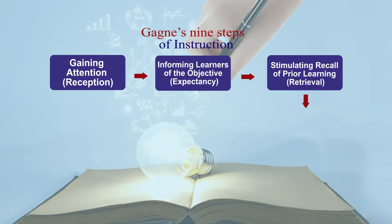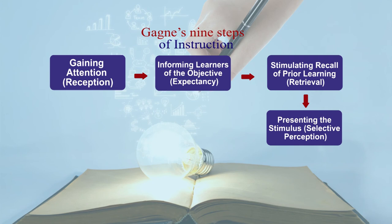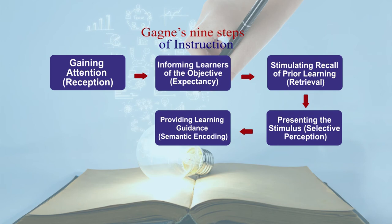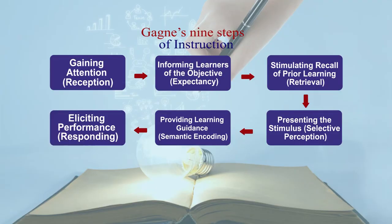After connecting with their previous knowledge, a teacher presents certain stimulus to them — you present content to them in different ways which they observe and work with. When you present the stimulus, you also provide learning guidance, which is called semantic encoding. You scaffold and support them to learn. And when they are learning, they respond to your questions, your activity, or you can give them certain tasks to elicit their performance — that is called responding.